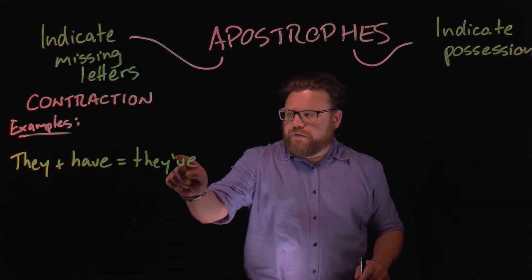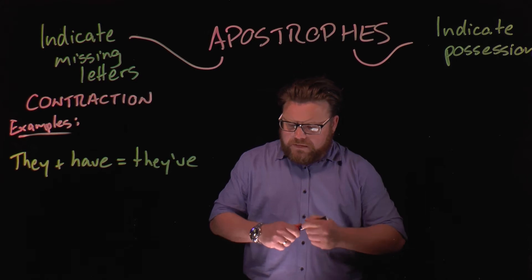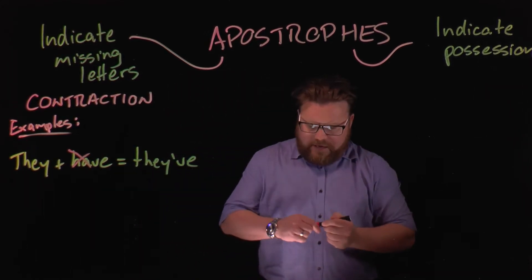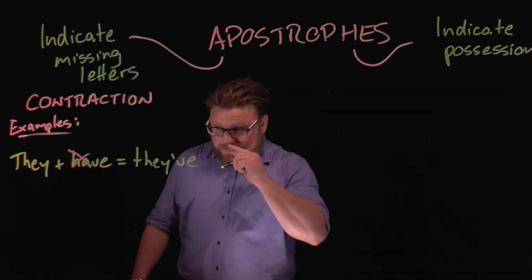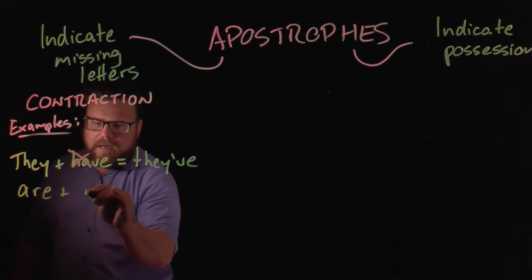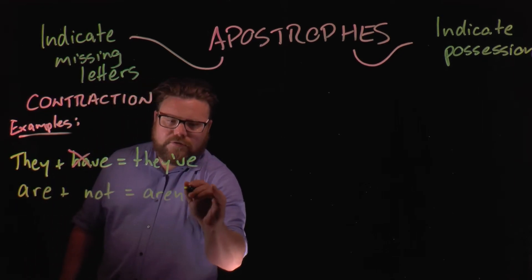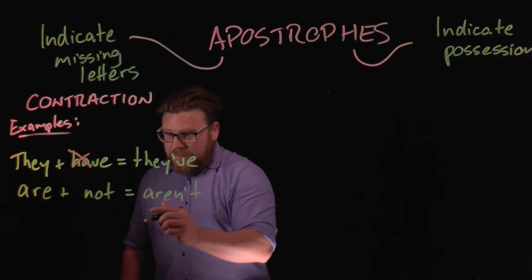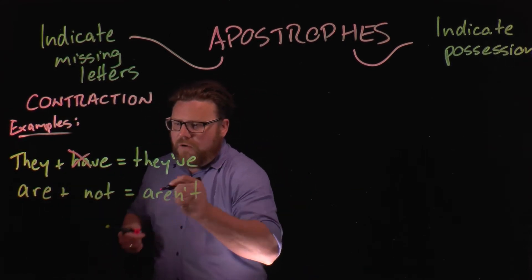Here's our apostrophe. The letters that we've cut out are the H and the A — so 'they've' from 'they' plus 'have.' Another example is 'are' plus 'not.' If we use the contraction 'aren't,' then the letter that has been cut out is simply the O.